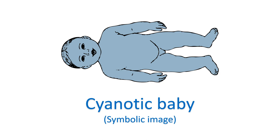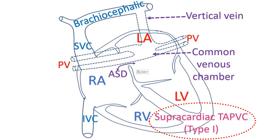Part of the blood returning from the lungs can get recirculated to the lungs, increasing the pulmonary blood flow. Increased pulmonary blood flow can cause pulmonary hypertension in the long run. There are basically 4 types of TAPVC.